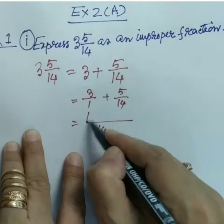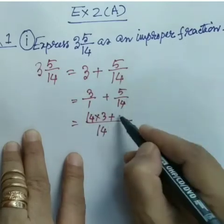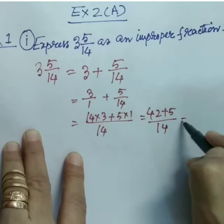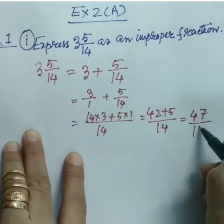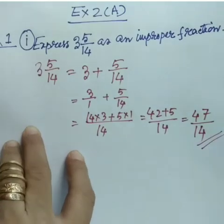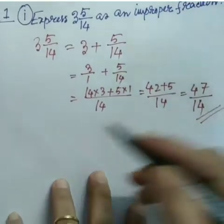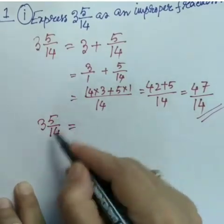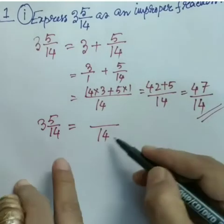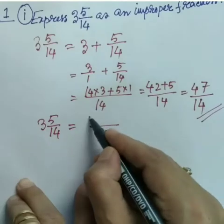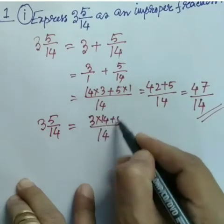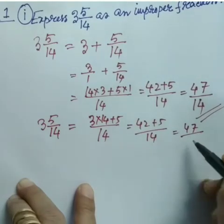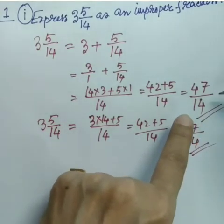So we get: 14 into 3 plus 5 into 1, all over 14, which equals 42 plus 5 over 14, giving us 47/14. Simply put: 3 and 5/14 equals, keeping 14 as the denominator, (3 × 14 + 5) / 14 = (42 + 5) / 14 = 47/14. This is our improper fraction.